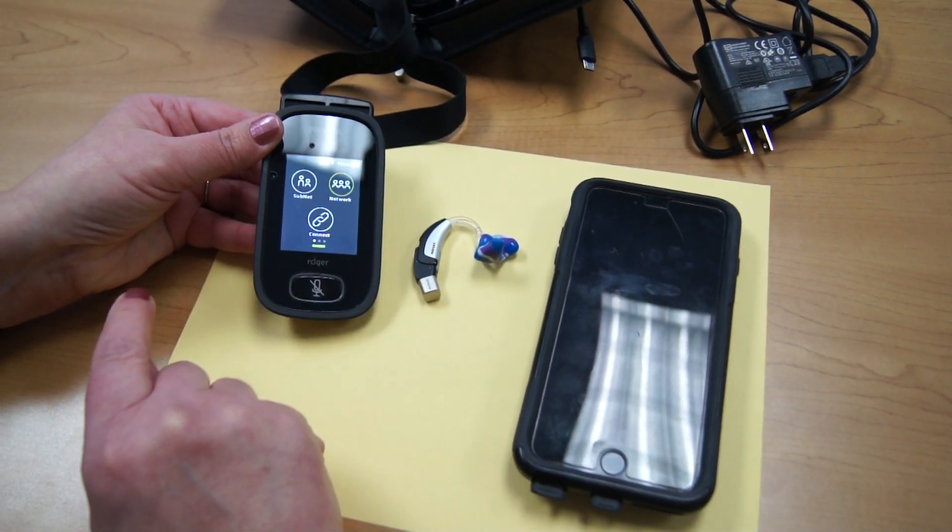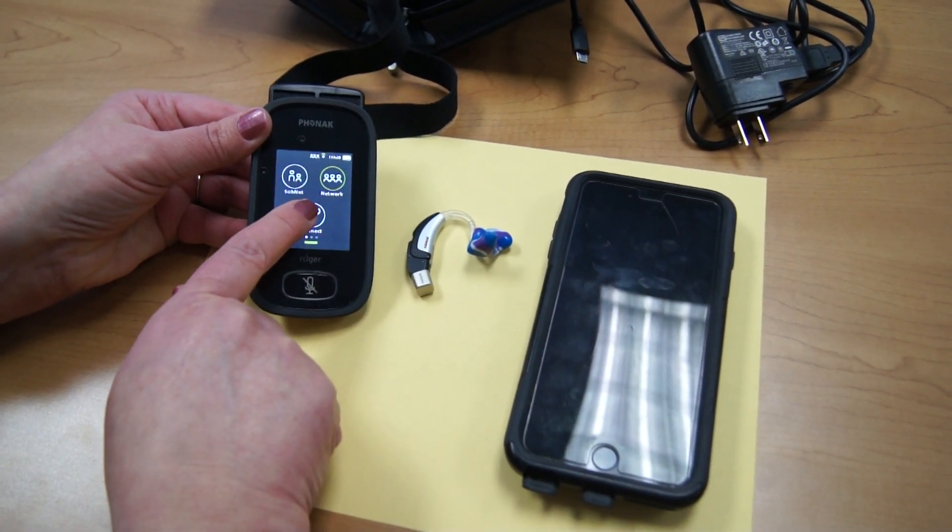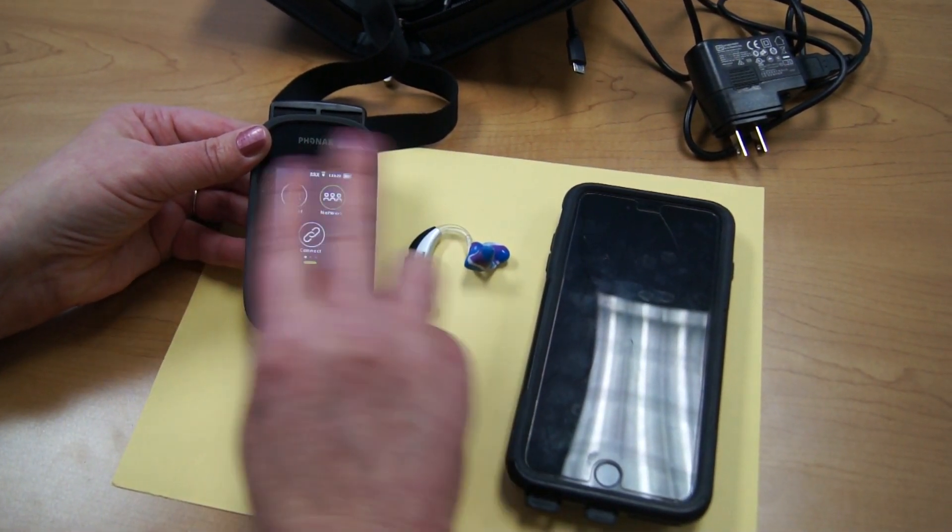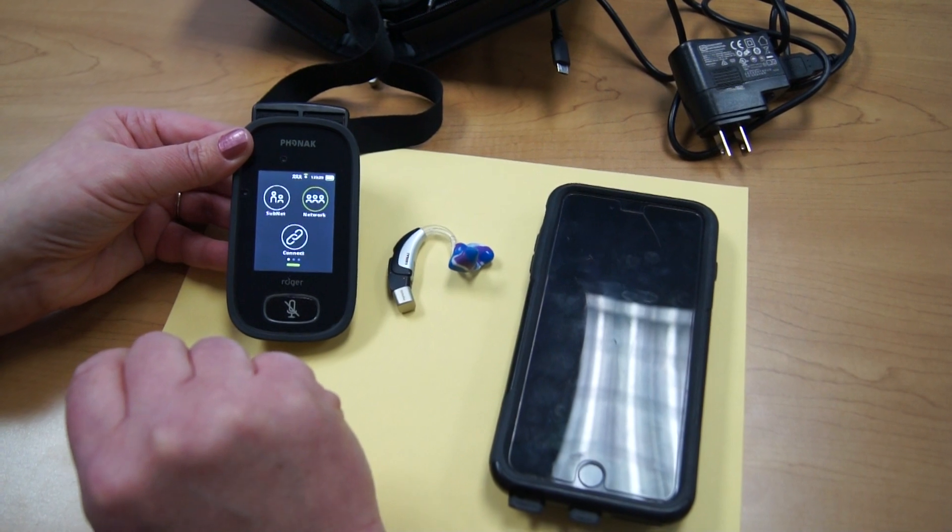When you want to connect, you need to be three to five inches from the hearing device and hit the connect button. You'll see Roger X connected and you're ready and they're synced together so they will hear each other.